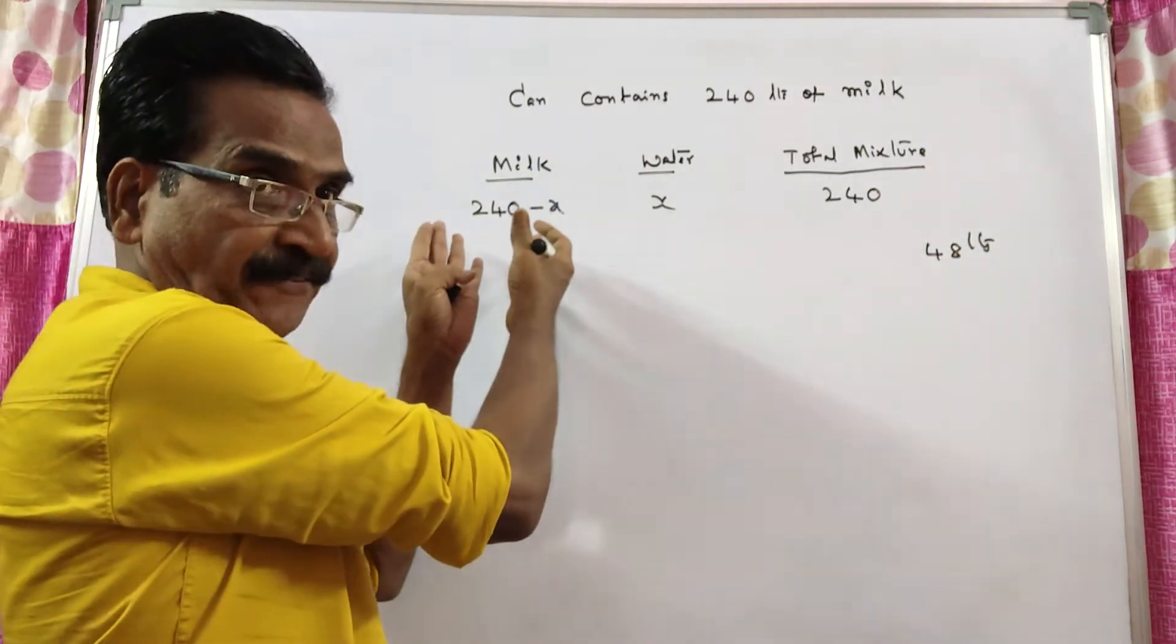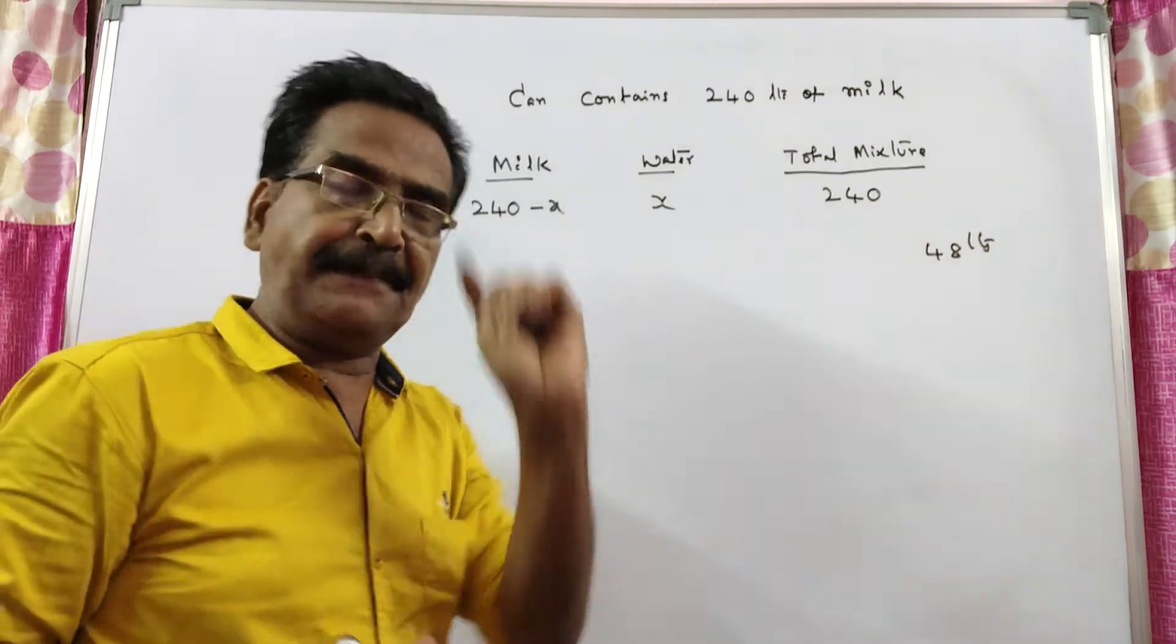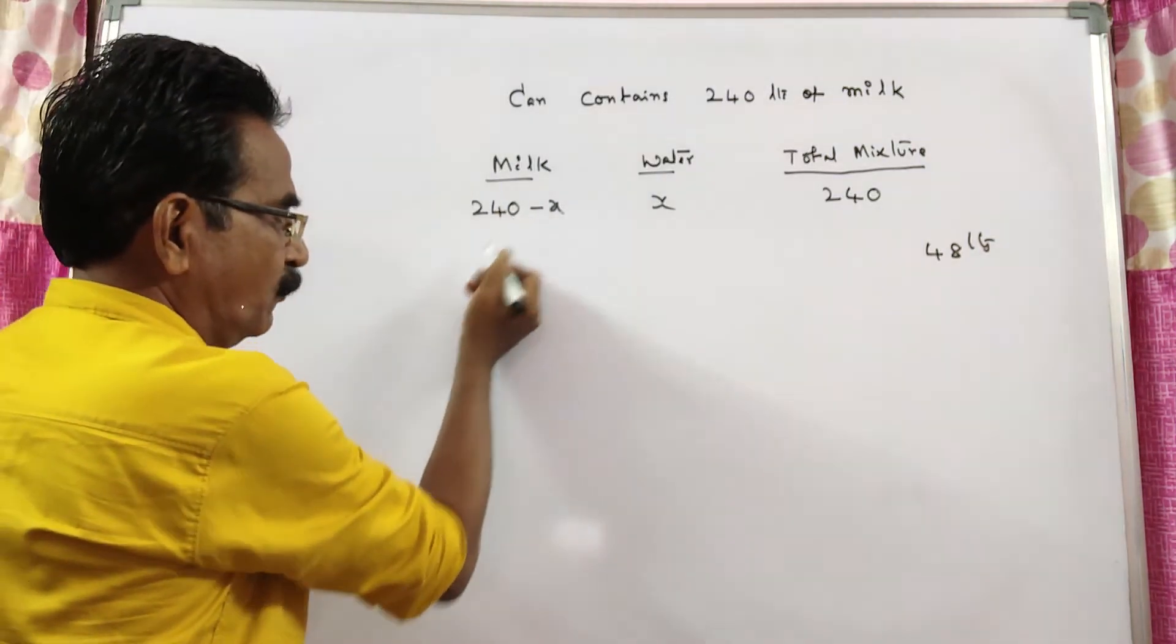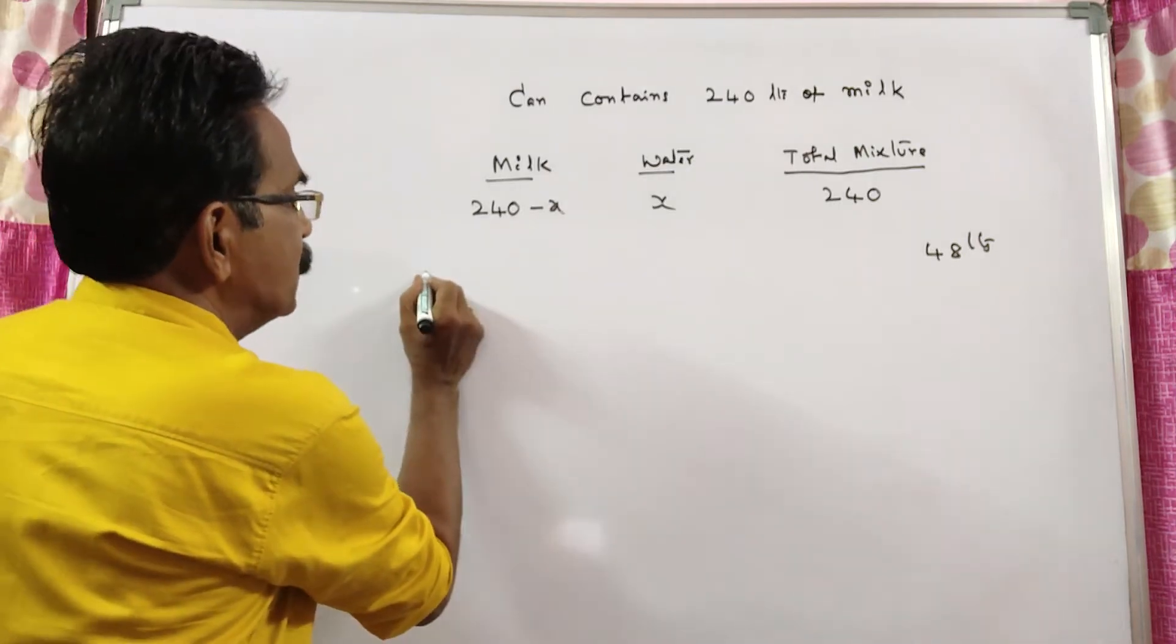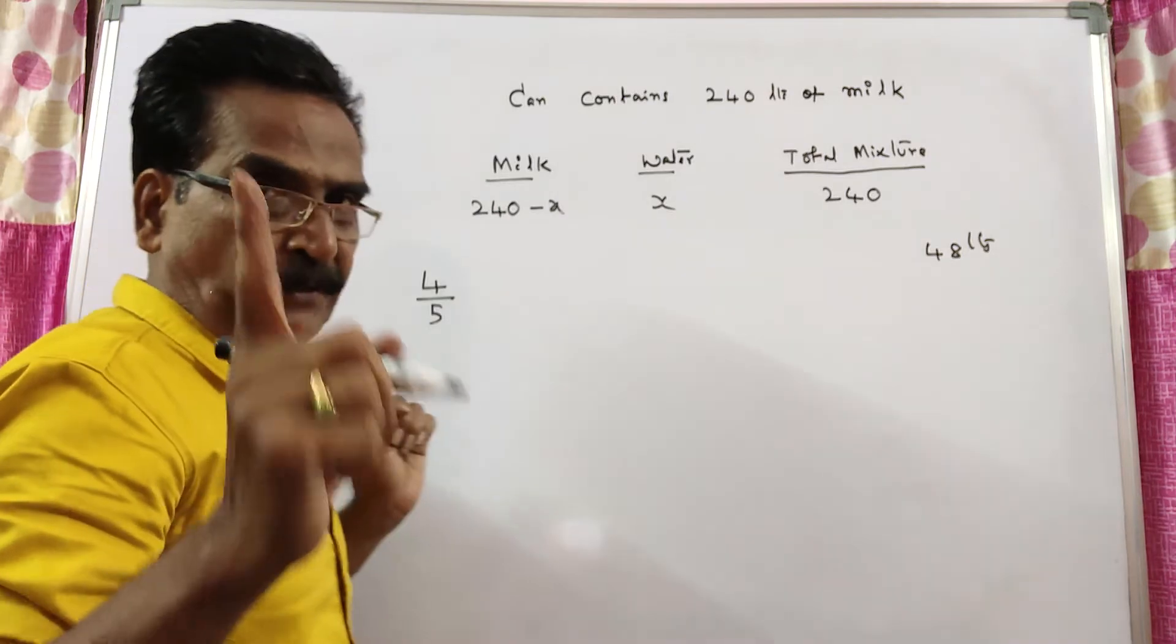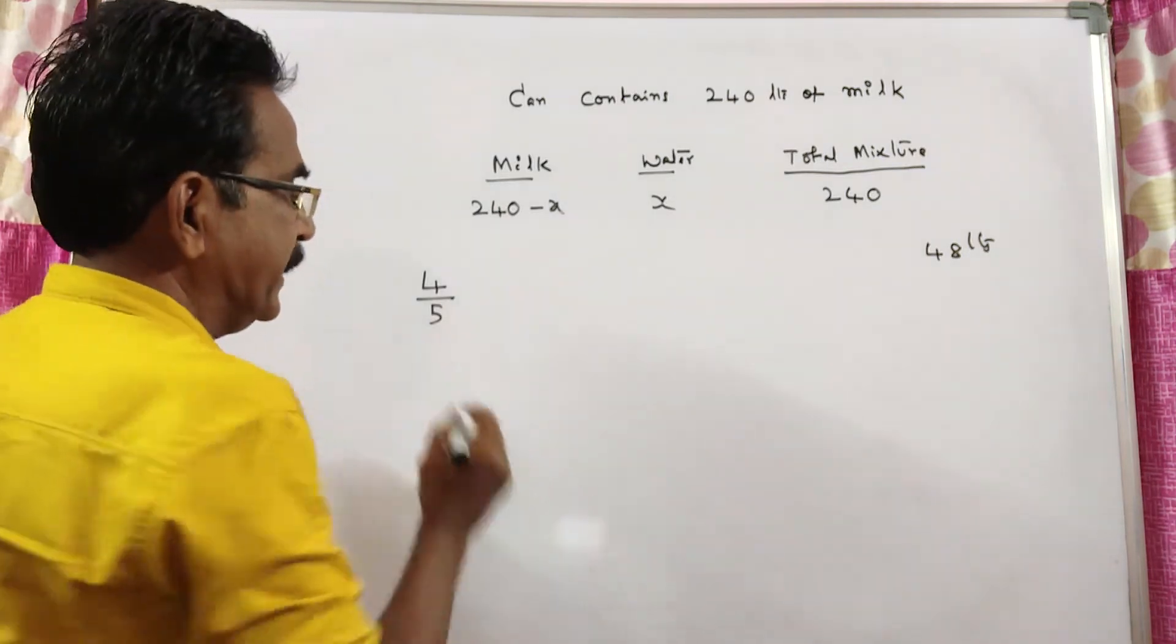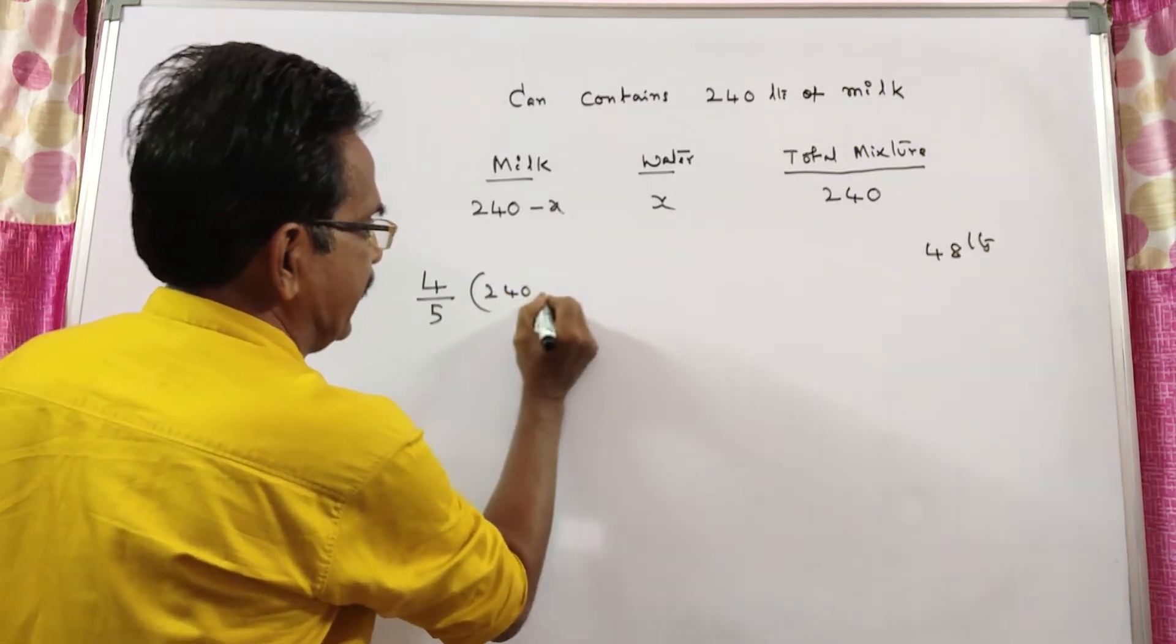If 20% of milk is drawn out, then what is the remaining milk? 80%. 80% of 240, 80% means 80 by 100, that is 4 by 5. So the remaining milk after drawing 20% of mixture, the remaining milk is 4 by 5, that is 80% of 240 minus x.